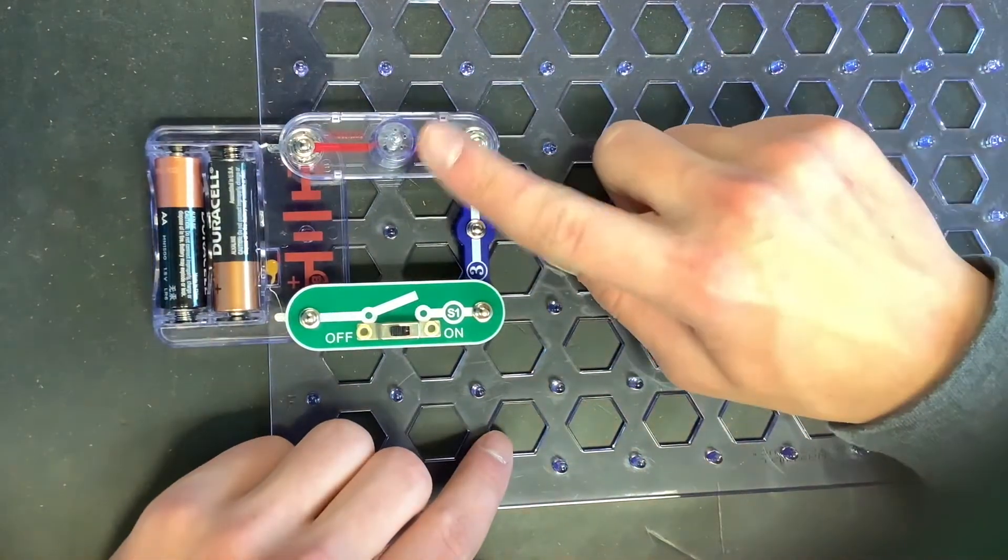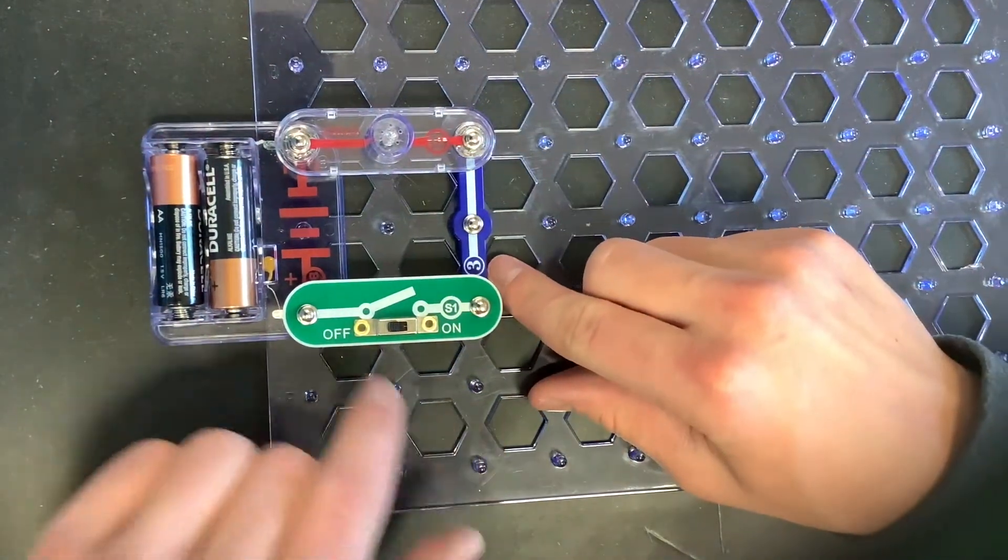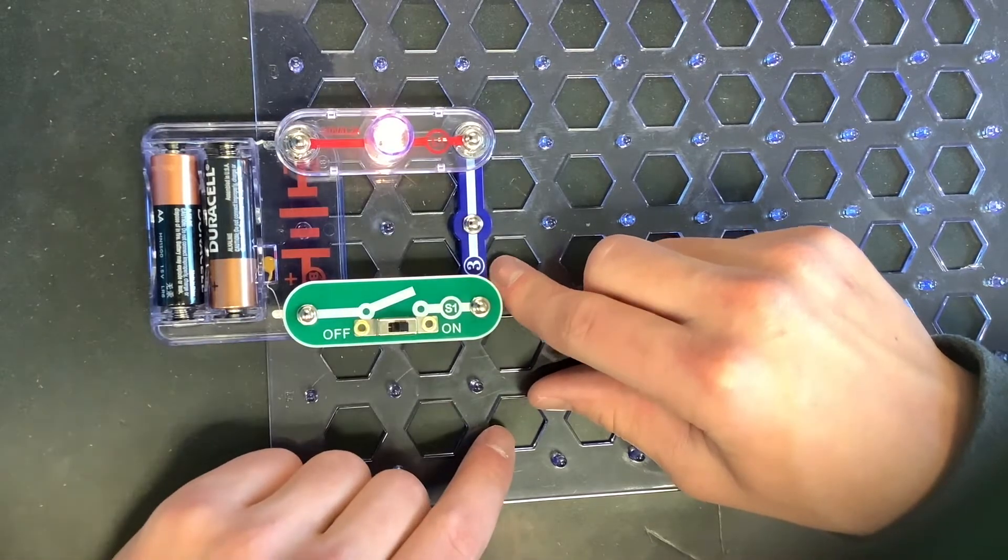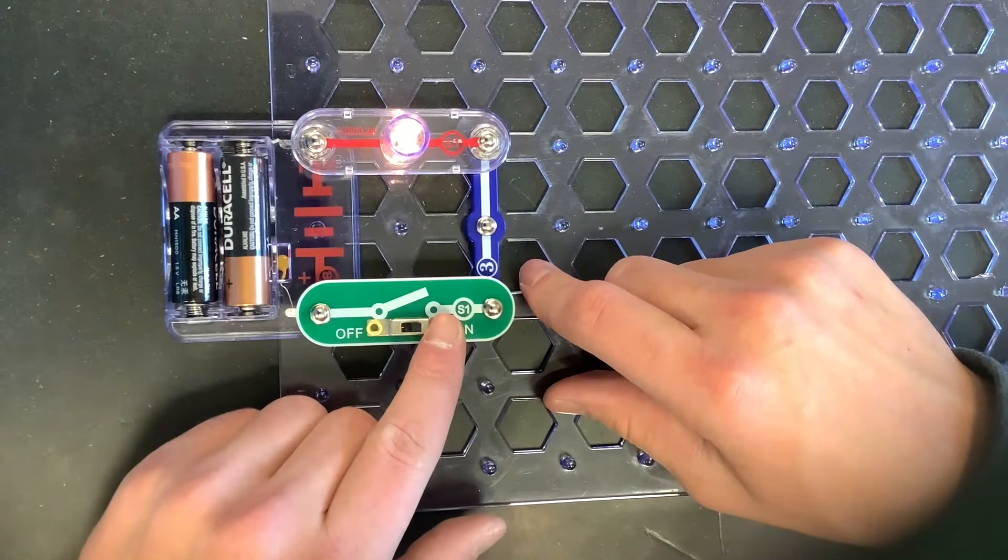So we have our circuit built here, added in that lamp. So let's flip the switch to on and see what happens. Yeah, pretty simple. That light just turns on.